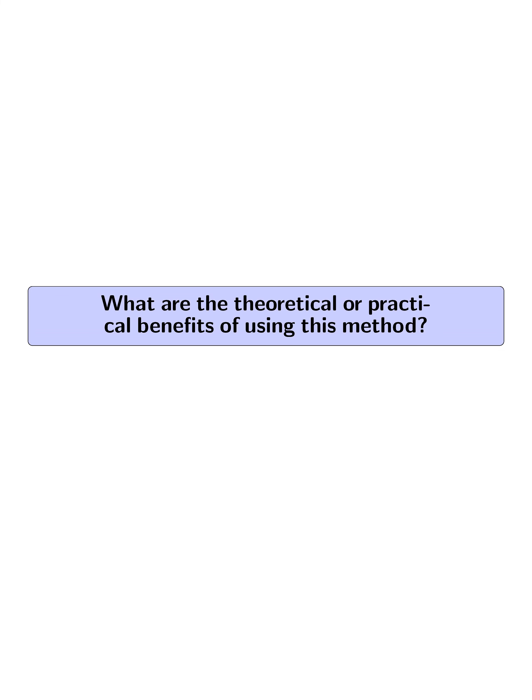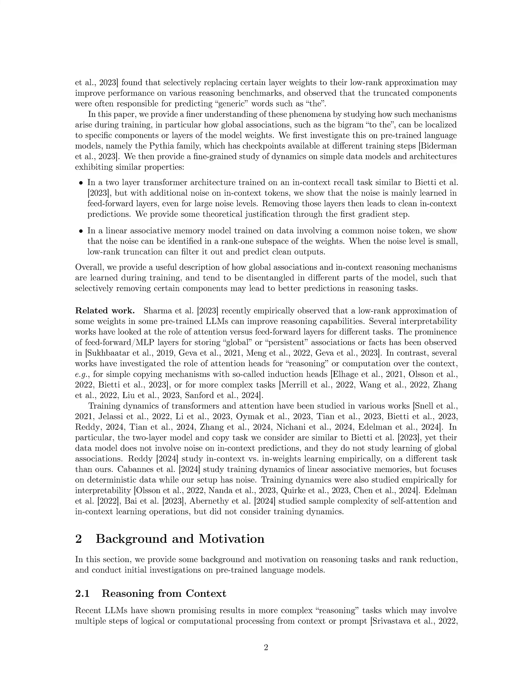What are the theoretical or practical benefits of using this method? The theoretical benefit of using LASER is that it helps inhibit predictions of global associations, such as generic words in large language models. By selectively reducing the rank of certain weights in MLP matrices in specific layers of LLMs, LASER improves the model's performance on reasoning tasks by filtering out noise and focusing on in-context predictions. This method allows for a finer understanding of how mechanisms arise during training, localizing global associations to specific components or layers of the model weights.